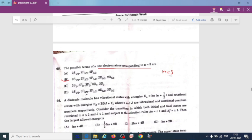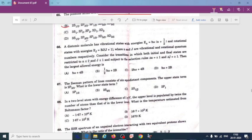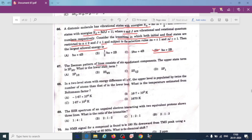A diatomic molecule has vibrational states with energy nth energy and rotational states with energy j, where n and j are vibrational and rotational quantum numbers respectively. Consider the transition in which both initial and final states are restricted. N must be less than or equal to 2 and j must be less than or equal to 1. Subject to the selection rule, change in n is equal to plus or minus 1, change in total angular momentum j is plus or minus 1. Then largest allowed value of energy is - so this is option D, I guess, h cross omega plus 2.